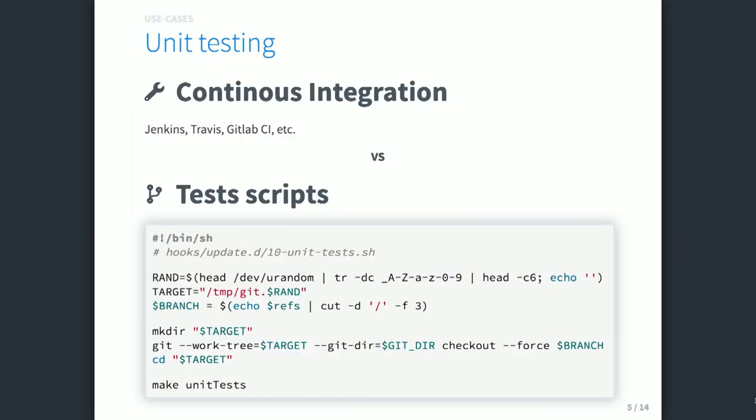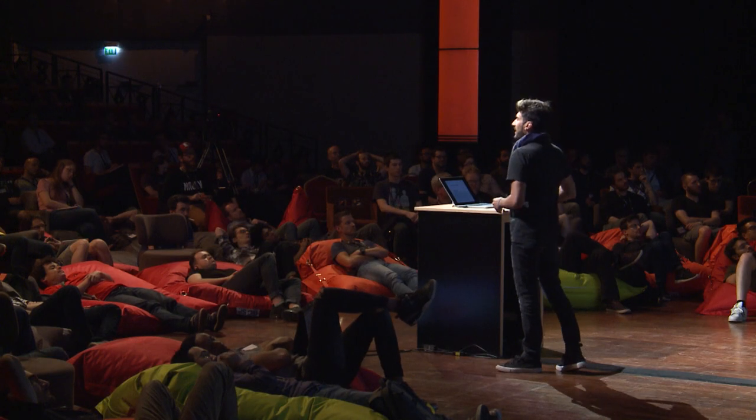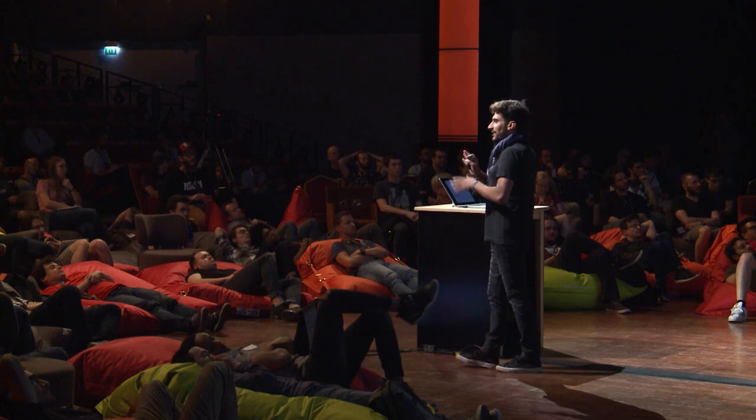So what are the use cases? You need tests. You probably use continuous integration tools like Jenkins, Travis, GitLab CI, or whatever you want. You can run your test scripts — it's as simple as checking out your branch into a temporary folder and running your Makefile, NPM run test, or whatever you need.